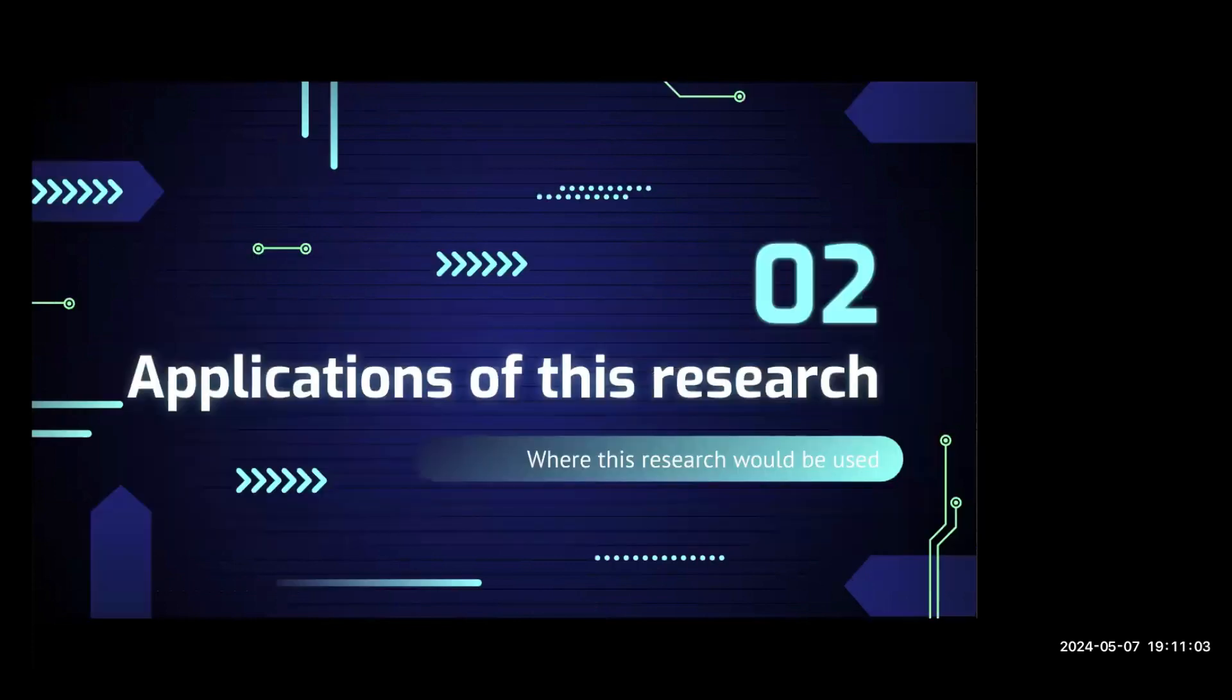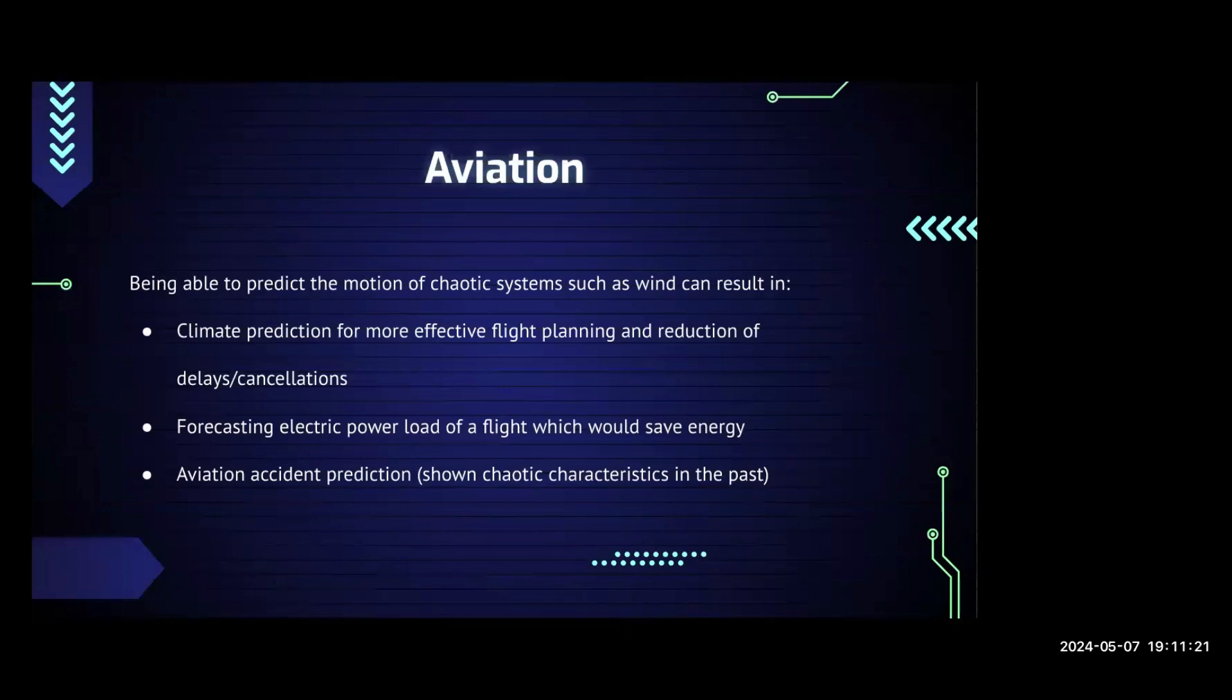My name is Vasista, and I'm the group lead of this project. Before we get into our progress on this specific topic, I'd like to go into the applications of this research and where it will be used. First, the first application is aviation. Being able to predict the motion of chaotic systems, such as wind, can result in better climate prediction for more effective flight planning and reduction of delays and cancellations. Once we are able to predict climate, we can also forecast the electric power load of a flight, which would save energy. We would also be able to predict aviation accidents, which have shown chaotic characteristics in the past.